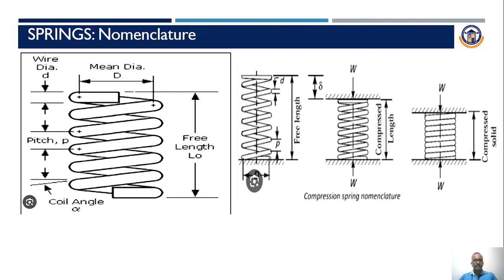This is the nomenclature of a spring where we can see the mean diameter, wire diameter, pitch, helix angle or coil angle, and free length. The free length is defined as the length when the spring is not in the loaded form, measured in the axial direction. Pitch is the gap or distance between the adjacent coils. In the case of an open coil helical spring, the pitch value is higher, while in the case of a closed coil helical spring, the pitch value is very minimum.